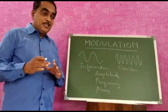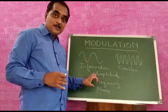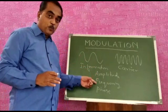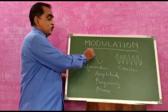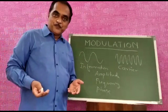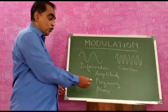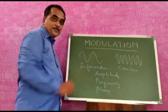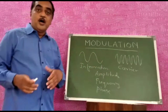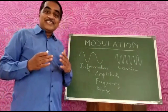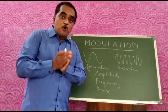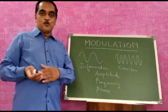Similarly, if you vary only the frequency — keeping amplitude and phase constant — according to the instantaneous value of the modulating signal, you get frequency modulation. Similarly, if you vary only the phase of the carrier according to the instantaneous value of the information or modulating signal, you get phase modulation. So these are the three types of modulations we study in analog modulation.